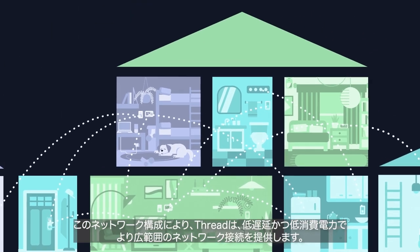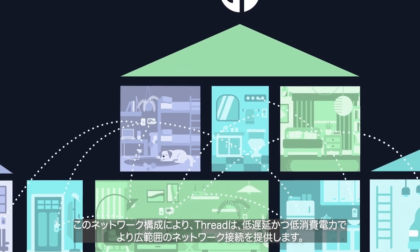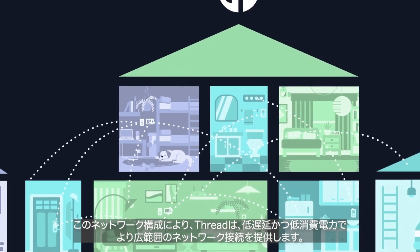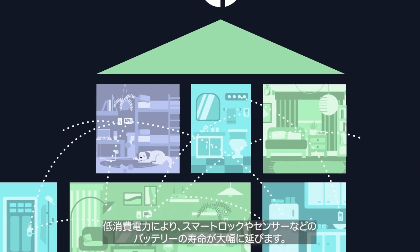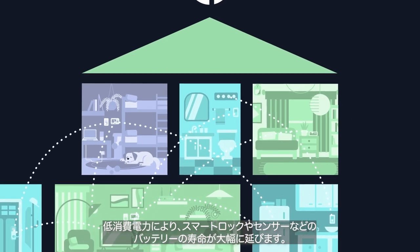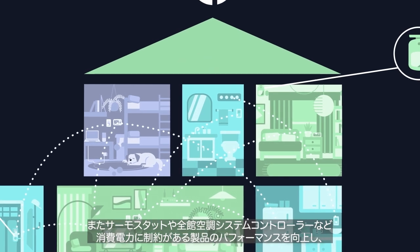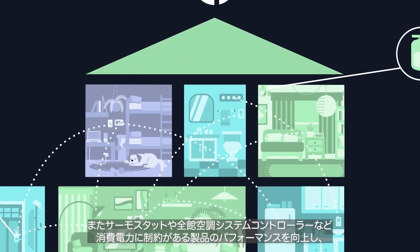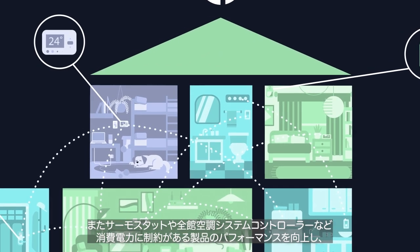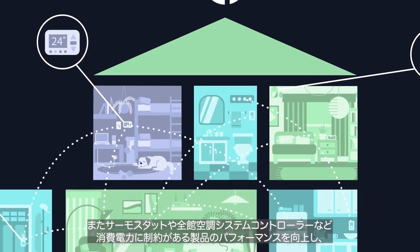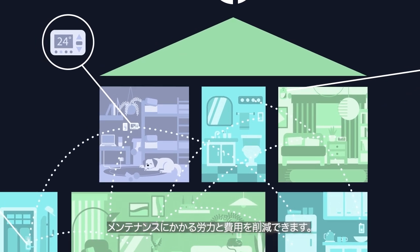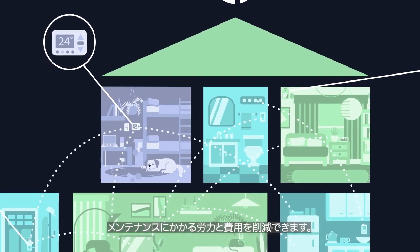This architecture enables Thread to provide greater range, with reduced latency and power consumption. Thread's low power consumption significantly extends the battery life of devices like door locks and sensors. It also improves the performance of power-constrained devices like thermostats and HVAC controls, enabling new applications with lower maintenance for your users.